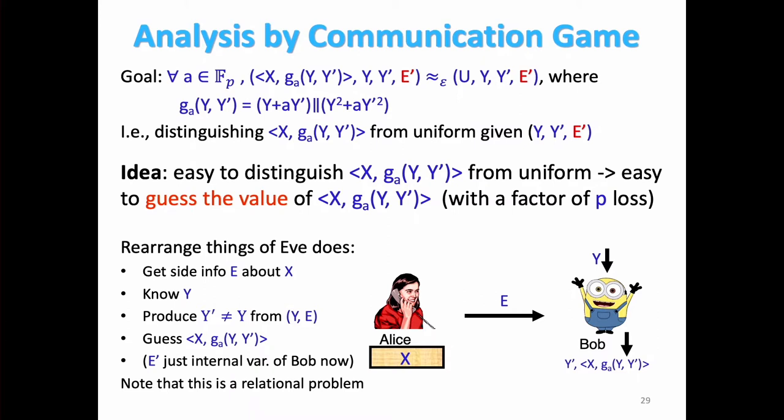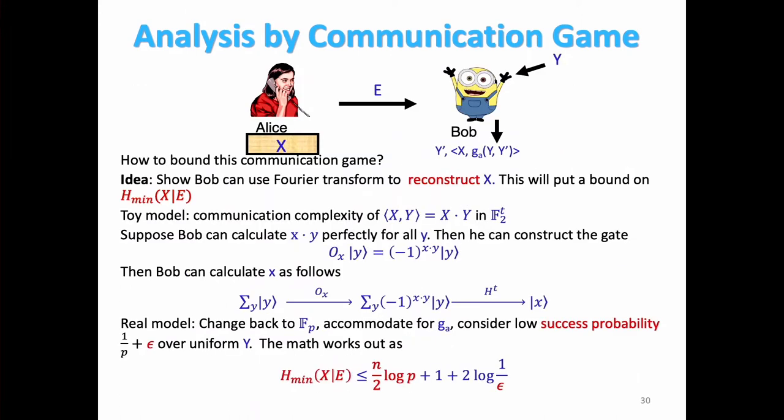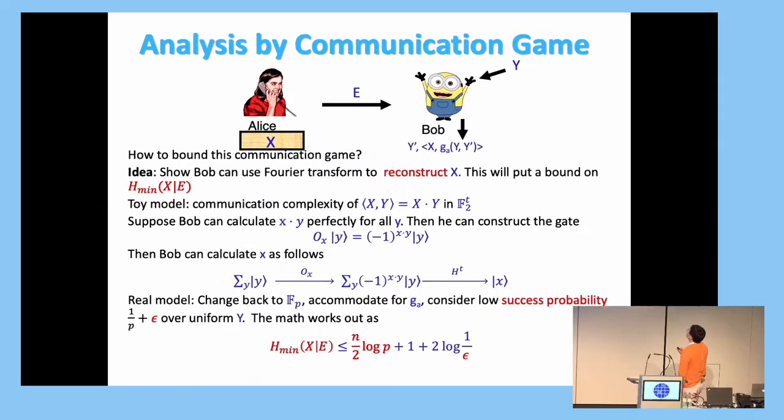And now this is the relational communication problem. So the usual communication problem will be Alice and Bob want to compute the function F of X and Y. But now Bob gets to choose this Y', so he can output multiple correct answers Bob can output.